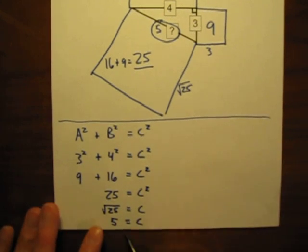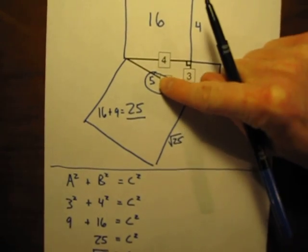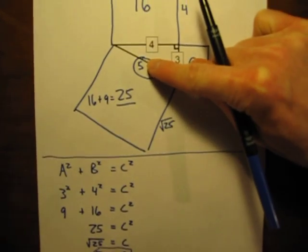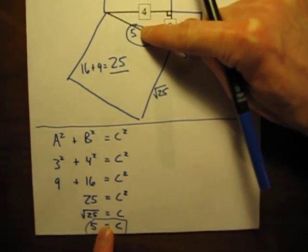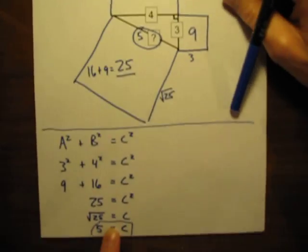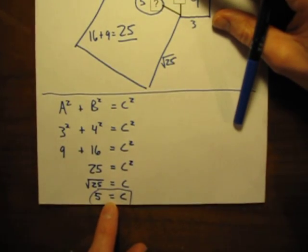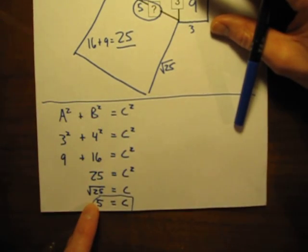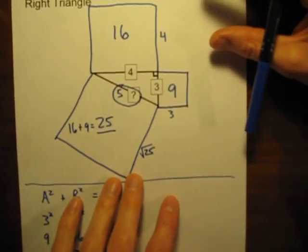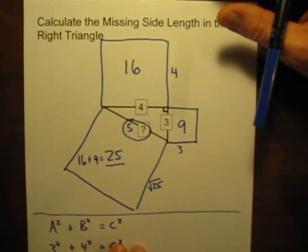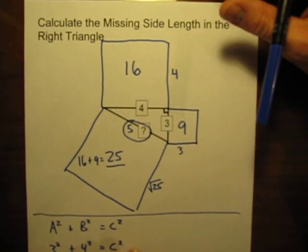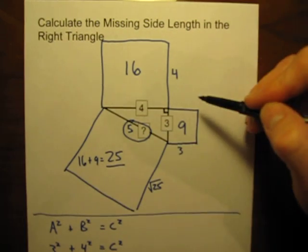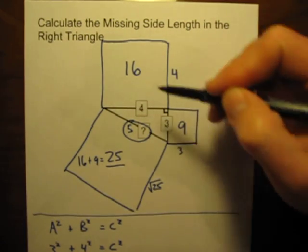So c must equal 5, which is exactly the same answer that we got up here when we were trying to solve it using the more geometric way. The algebraic way just plugging numbers into that formula gave us the same answer. Some people much prefer just plugging numbers into the formula. Other people feel a little more comfortable with the geometric representation. They like seeing the pictures, finding the area, adding those areas up.